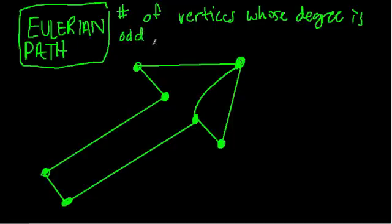So how many vertices have an odd degree? When it's two, when there's two of them, then we have a path, an Eulerian path.